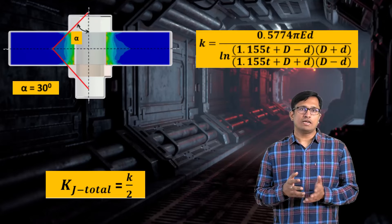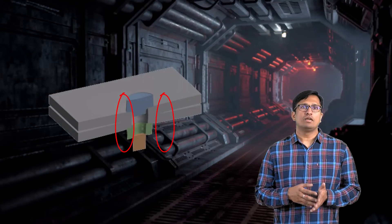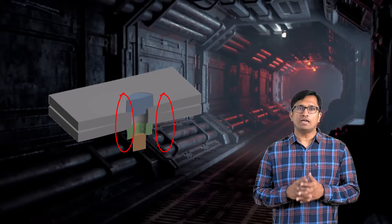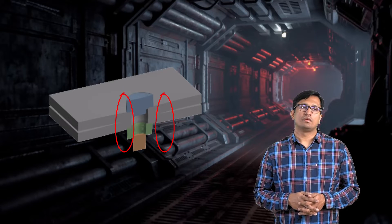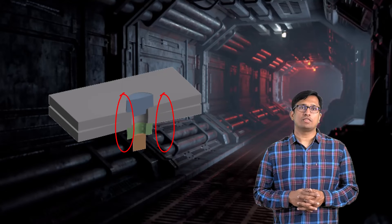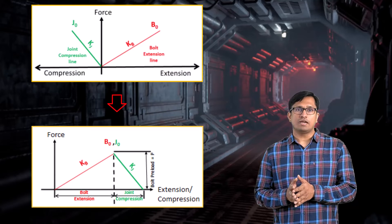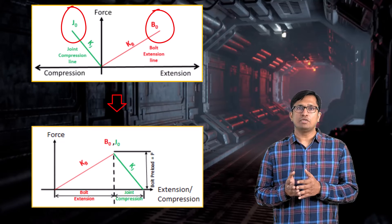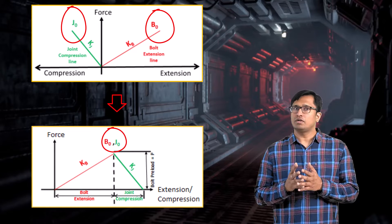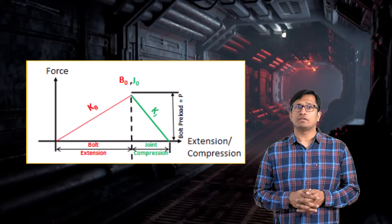The bolt extension and the compression of the clamped parts depends on the applied preload and their respective stiffnesses. The origin of the joint compression line is moved such that points J0 and B0 coincide to form a triangle. This is the joint diagram.